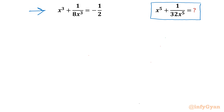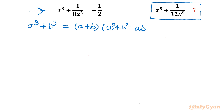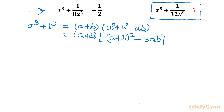I will begin by writing one identity which we know: a³ + b³ = (a + b)(a² + b² - ab). The second bracket can be rewritten in terms of (a + b): so a² + b² becomes (a + b)² - 2ab, then we write minus 3ab so that the net result is minus ab.